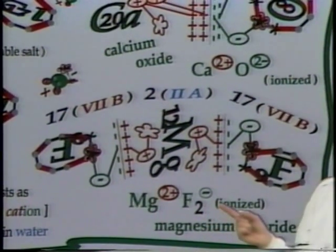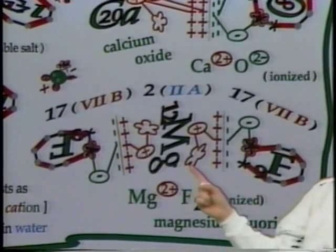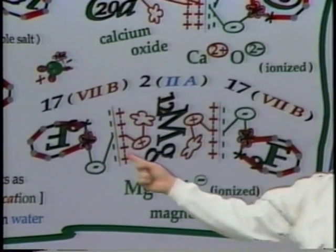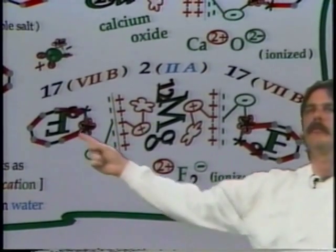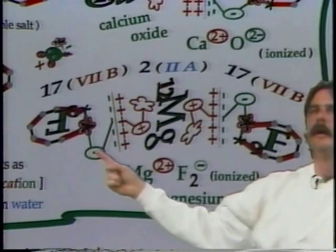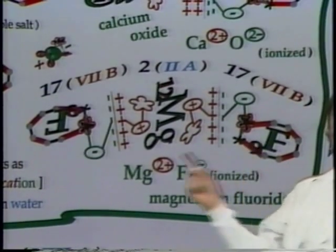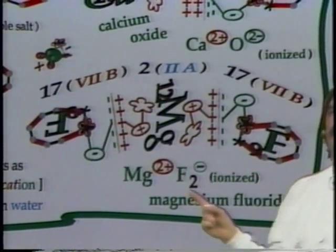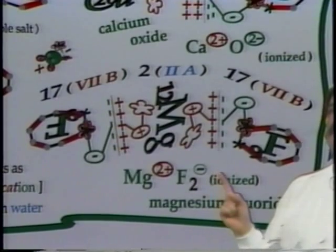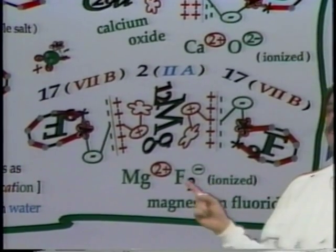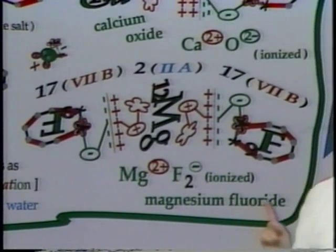When magnesium is folded next to fluorine, we see magnesium has two electrons in its outermost valence shell. Fluorine only needed one more for its octet, so fluorine takes one electron and becomes fluoride anion. Magnesium gives up another electron to a second fluorine, showing we need two fluorines to balance the magnesium. Magnesium ends up with a two-plus charge, and each fluoride anion has a minus-one charge, but there are two of them. The atomic ratio is one magnesium and two fluorines — magnesium fluoride.